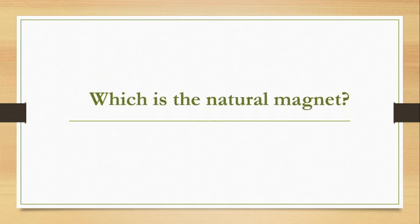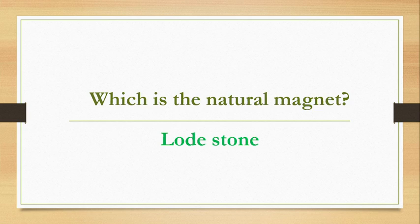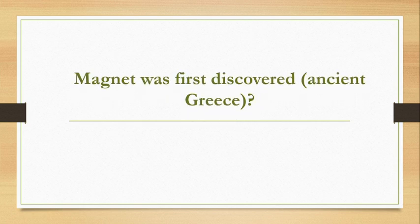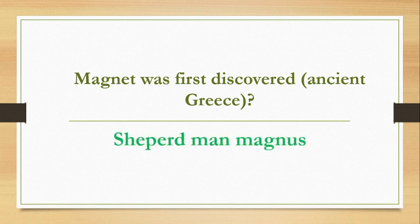Which is the natural magnet? The natural magnet is lodestone. Magnet was first discovered in ancient Greece — the person's name is a shepherd man.